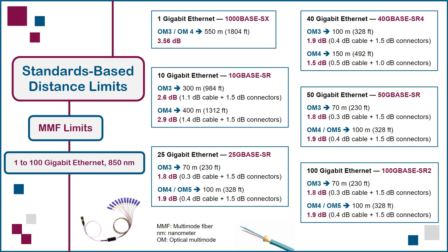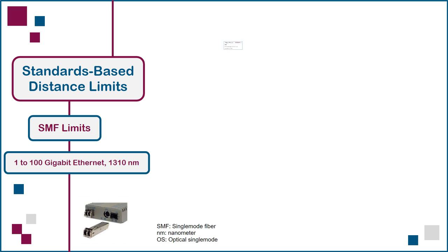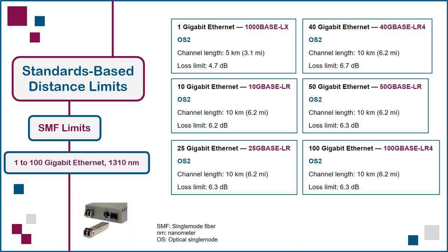Note that the maximum channel lengths decrease significantly above 10 gigabits per second, with no more than 70 meters allowed in some cases. This limited reach makes it necessary to consider single-mode fiber when designing network links for larger buildings or multi-building campuses. Here are the equivalent channel length and loss limits for single-mode fiber, using transceivers that operate at the lower single-mode wavelength of 1310 nanometers. Using single-mode fiber instead of multi-mode extends a network channel from meters to kilometers, but there's a higher price to pay for the single-mode optical transceivers at both ends of the channel. Note that there are also published standards for single-mode links longer than 10 kilometers, but our focus here is on building and campus connectivity.